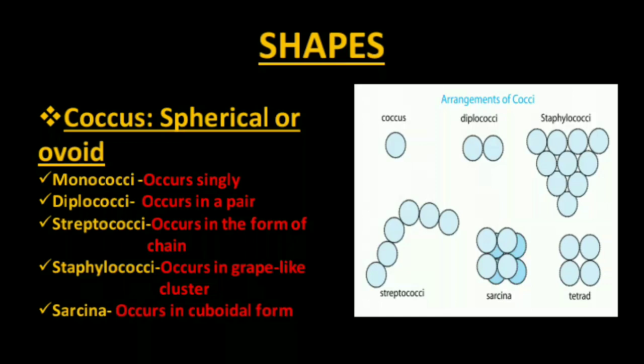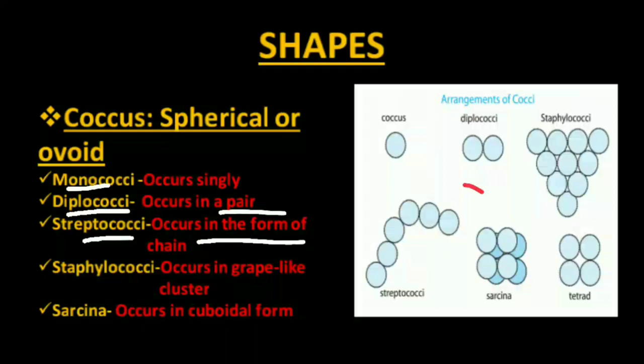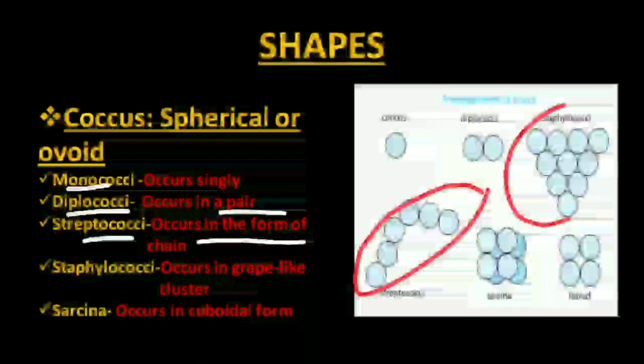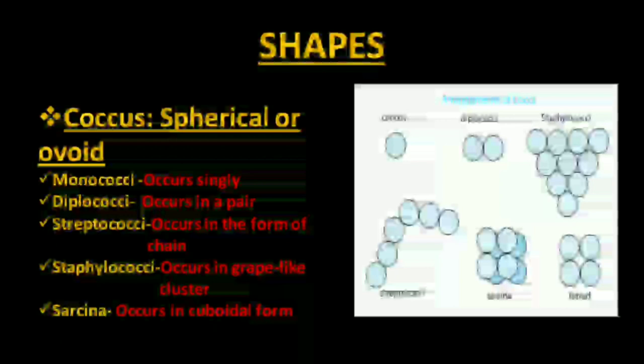Now let us look at the shapes of different kinds of bacteria. Bacteria can be spherical or ovoid — when spherical they are called coccus. When occurring singly, they are called monococci; in pairs, diplococci; in chains, streptococci; in grape-like clusters, staphylococci; and in cubical shape, sarcina. You can see these arrangements clearly in the diagram.